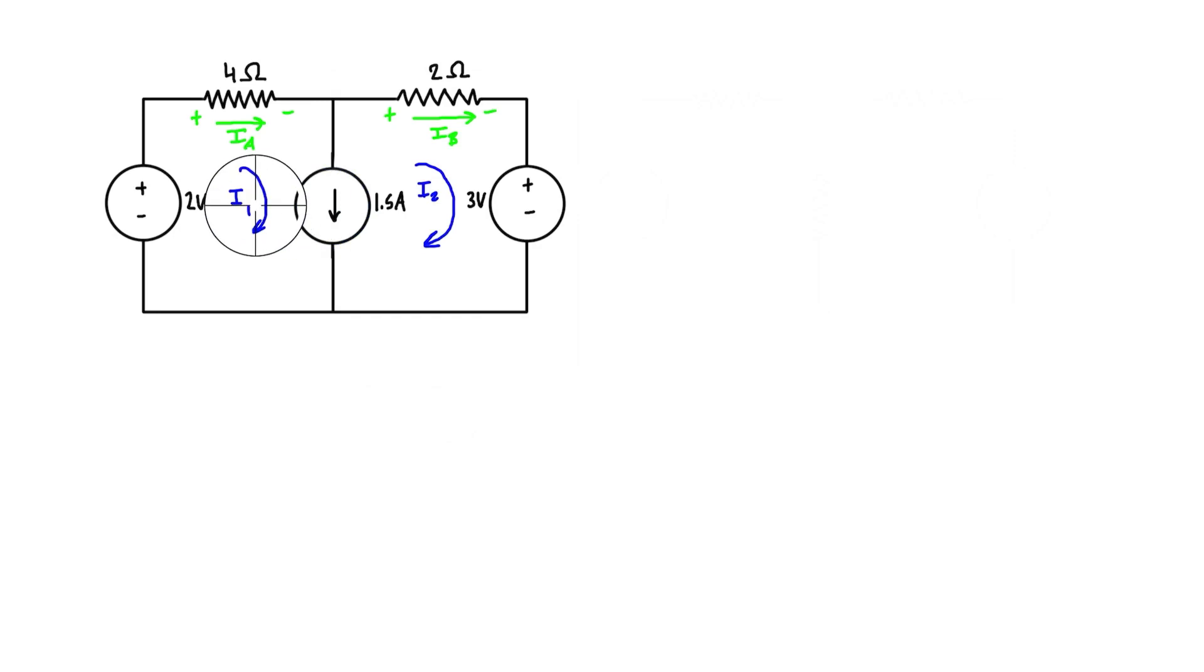What we can get from this diagram, first of all, is we can at least figure out the relationship between I1 and I2. Because I1 is going around the loop this way, and when you come through this area, I1 is going like this, and I2 is doing the opposite. I2 is going up like that. Now we know that there's 1.5 amps going down. So I1 minus I2 is going to be the net, which is 1.5 amps. So we can write that down: I1 minus I2 is equal to 1.5 amps.